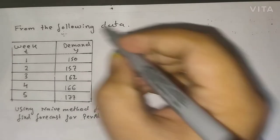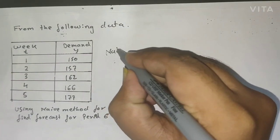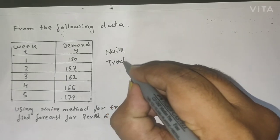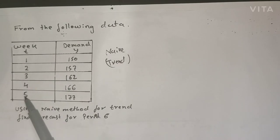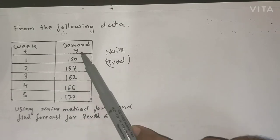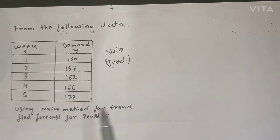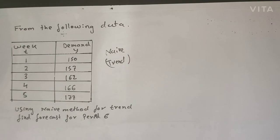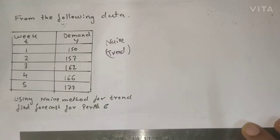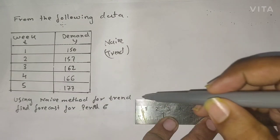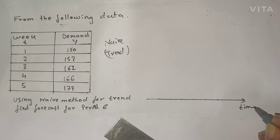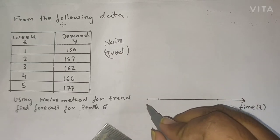Now let us see the first problem using the naive method for trend. You are given data for five weeks with demand values for each week. Using the naive method for trend, find the forecast for period six. If we plot this on a graph, the x-axis represents time t with weeks zero through six.